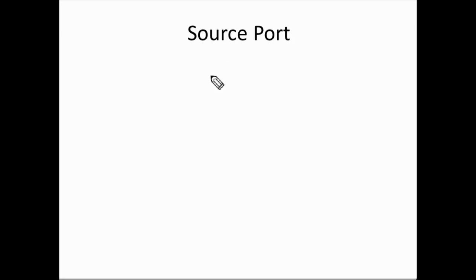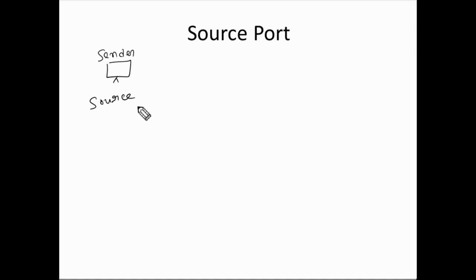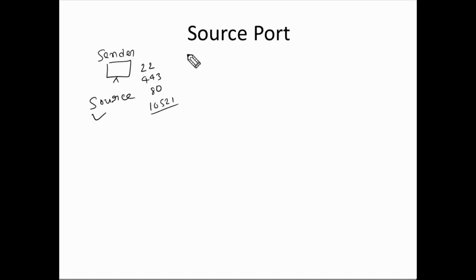The first segment is source port. The source port tells us about the port of the sender. The sender, also called the source, could be using any port — port 22, 443, 80, or any unidentified port like 16521. Whatever port is being used by the source computer is called the source port. The source port is a 16-bit segment.